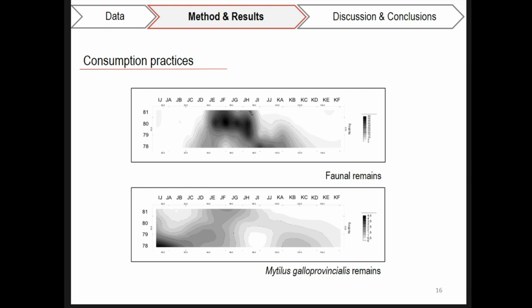Regarding the predictive models obtained, two dissimilar patterns of distribution were obtained for the categories representing consumption practices. The distribution pattern of fauna remains is cumulative and mainly concentrated in a specific central area. This central area, moreover, coincides with the wooden structure taken as a reference. On the other hand, the distribution of Mytilus galloprovincialis remains is dispersed through the entire surface. Moreover, no significant concentration comparable to the observed for fauna remains is found.